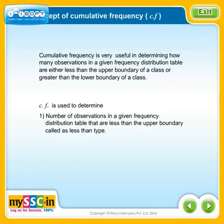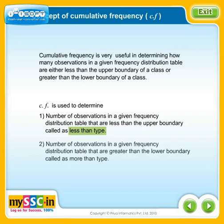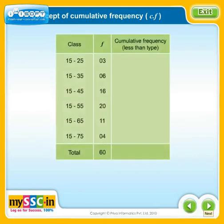Cumulative frequency is used to determine the number of observations in a given frequency distribution table that are less than the upper boundary, called less-than type, and the number of observations that are greater than the lower boundary, called more-than type. Let's see the given frequency distribution table and how less-than type cumulative frequency is calculated.